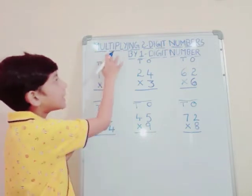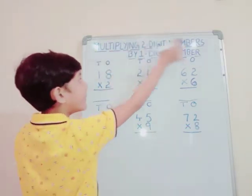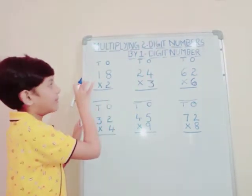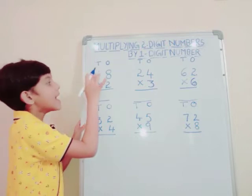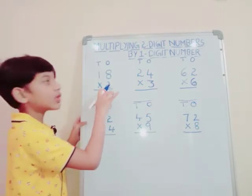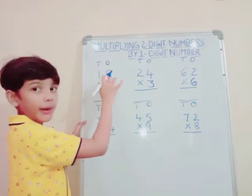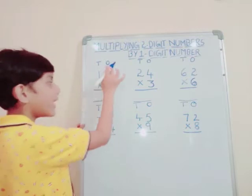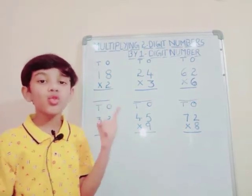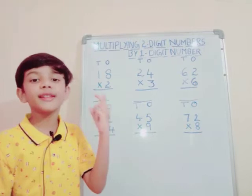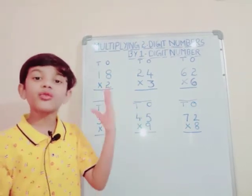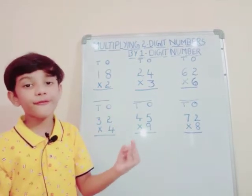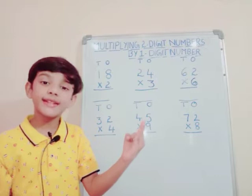First of all, multiplying 2-digit numbers by 1-digit number. Our first sum: 18 into 2. We should multiply the 1's digit number by 2. That is: 2×1=2, 2×2=4, 2×3=6, 2×4=8, 2×5=10, 2×6=12, 2×7=14, 2×8=16.